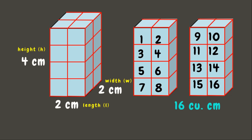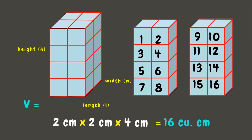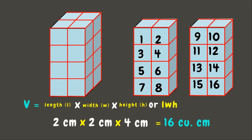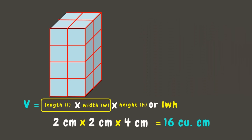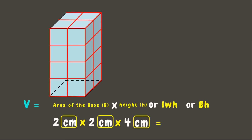We can see that we have formed some cubic units. Let's count them — we have 16 cubic centimeters, and that's the volume of this prism. We can observe that if we multiply 2 cm × 2 cm × 4 cm we get 16 cubic centimeters. To get the volume of a prism we can simply multiply length × width × height, or equivalently the area of the base times the height: V = B × h. The answer is written as 16 cubic centimeters, or 16 cm³.